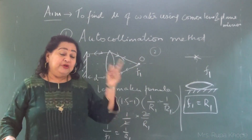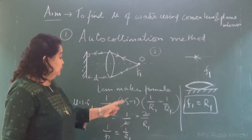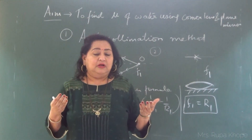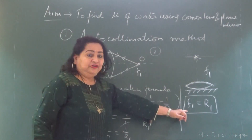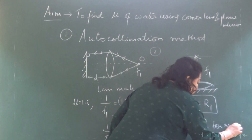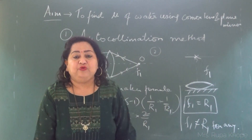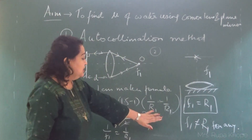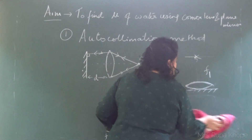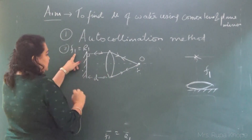This relationship f1 = R1 is only true for a lens made of glass with refractive index 1.5. If any other material is used whose refractive index is not 1.5, then this is not true. So this is the first important result we derived: f1 = R1.